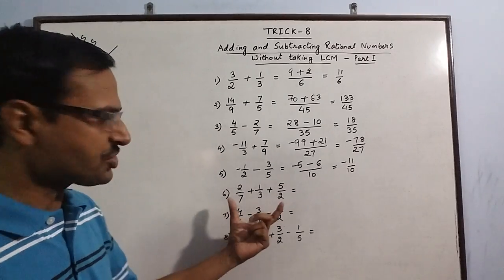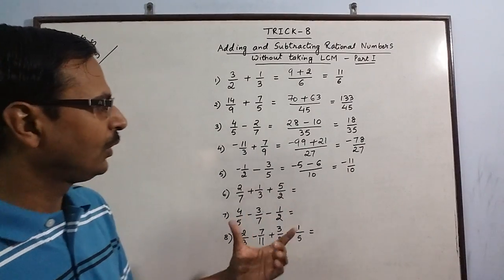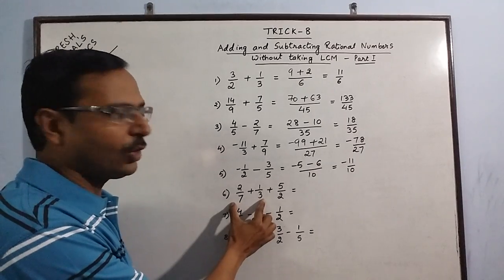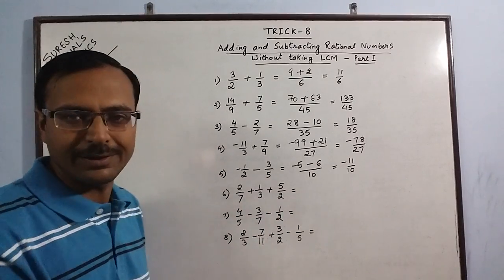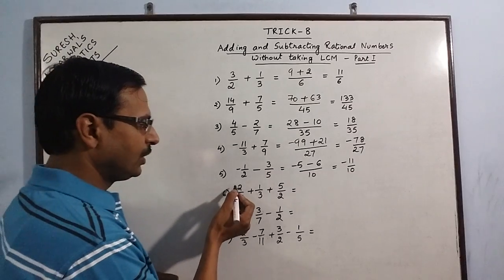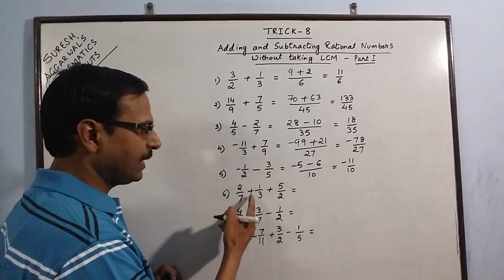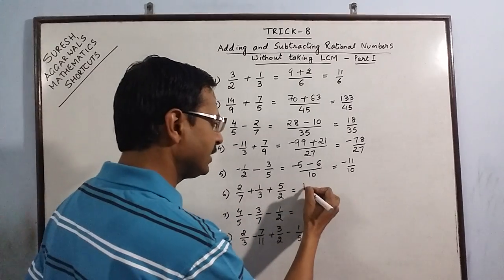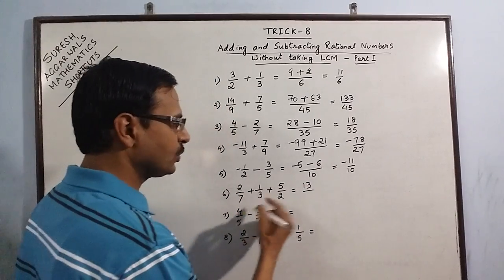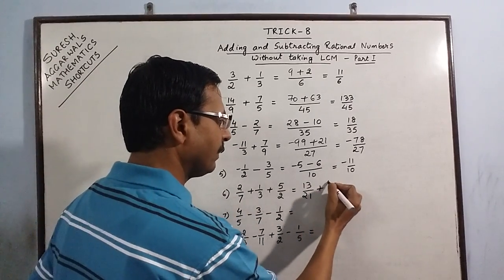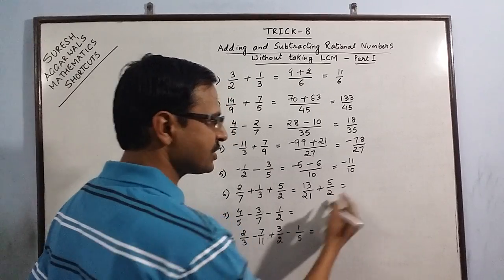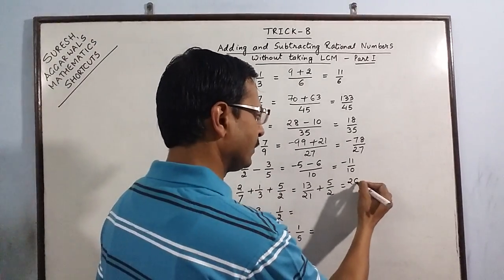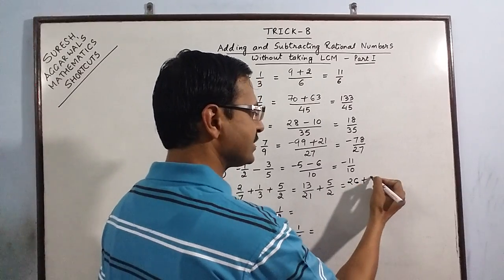Now we have three rational numbers, so we reduce the first two into a single rational number and then apply the same procedure to the third. 2 times 3 is 6, plus 7 times 1 is 7; 6 plus 7 is 13, over 7 times 3 is 21. Then plus 5/2 as the third rational number. 13 times 2 is 26, and 21 times 5 is 105.